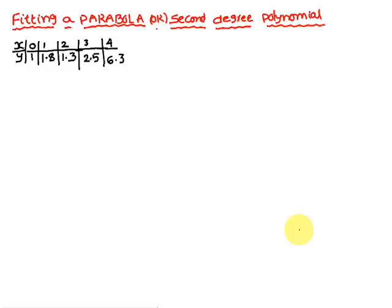Today we are going to discuss fitting a parabola, or second degree polynomial, by the method of least squares. The given data: x = 0, y = 1; x = 1, y = 1.8; x = 2, y = 1.3; x = 3, y = 2.5; x = 4, y = 6.3. We need to find a particular parabola using the method of least squares.